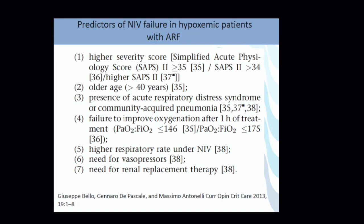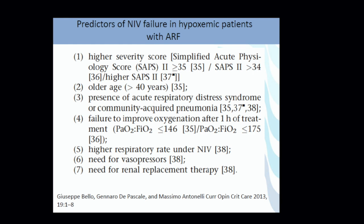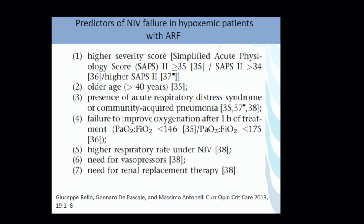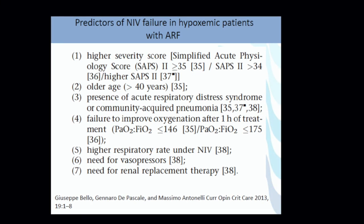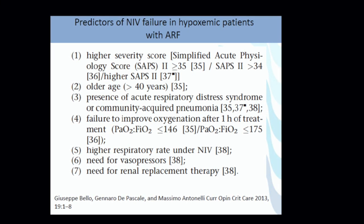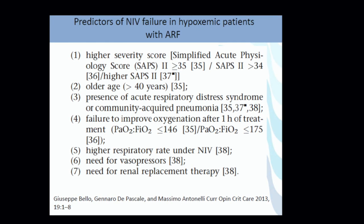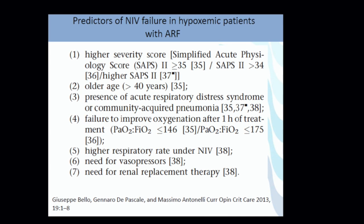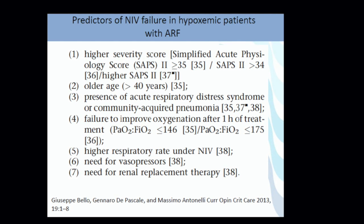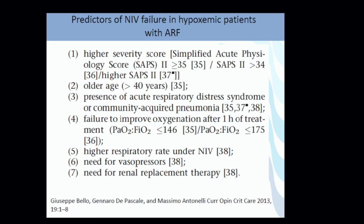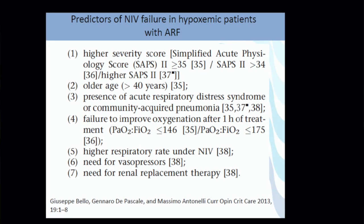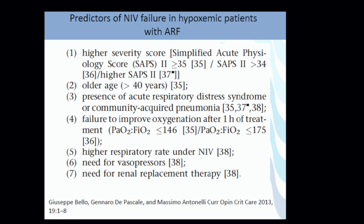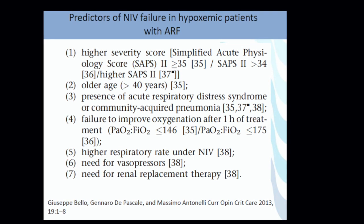If they are needing vasopressor support because they are hemodynamically unstable, or if they are having multiple organ dysfunction such as the need for renal replacement therapy besides respiratory support, they are unlikely to succeed with non-invasive positive pressure ventilation. A few clinical predictors of NIV failure: if your patient has a very severe acidosis or very low pH, they are less likely to succeed. For example, somebody with a pH of 7.30 is more likely to succeed, but with a pH of 6.9 or 7.1 is very unlikely to succeed with non-invasive ventilation.